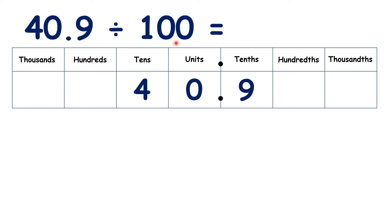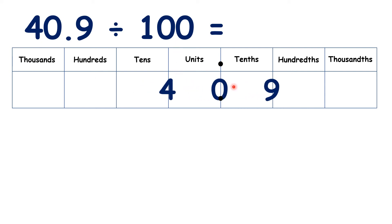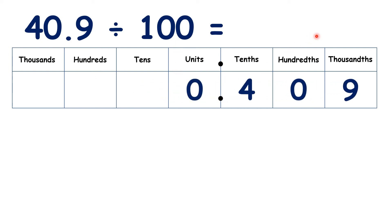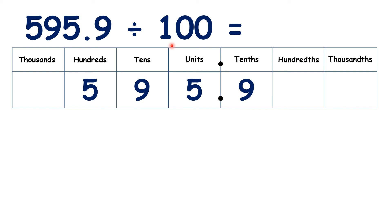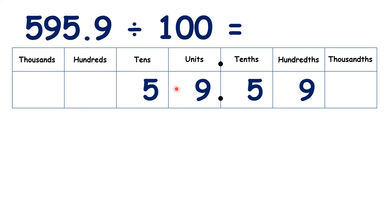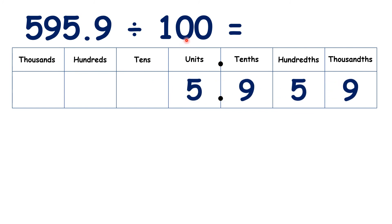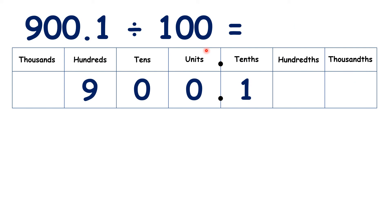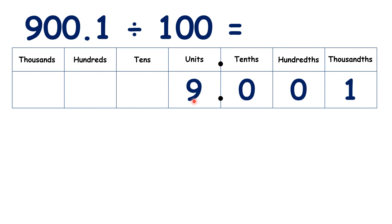For 40.9 divided by 100, we move the digits and we have 0.409. For 595.9 divided by 100, we move the digits two places to the right, so we have 5.959. And for 900.1 divided by 100, we move the digits two places, so we have 9.001.